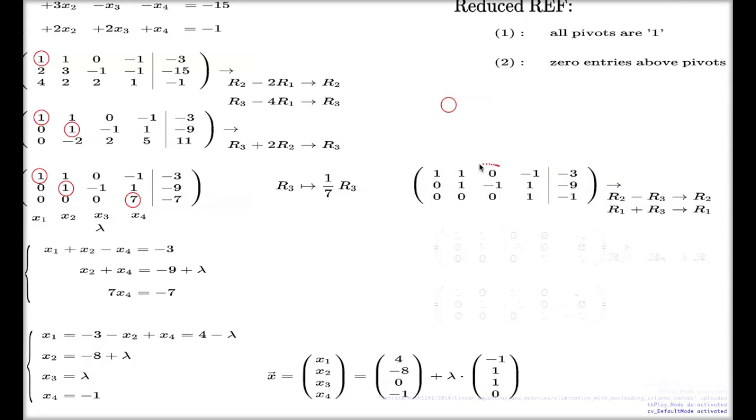If I do these two operations, this part of the matrix will stay unchanged. These two will go into zero. Something will happen here. Some alterations will happen in this part of the matrix. In fact, easy alterations.